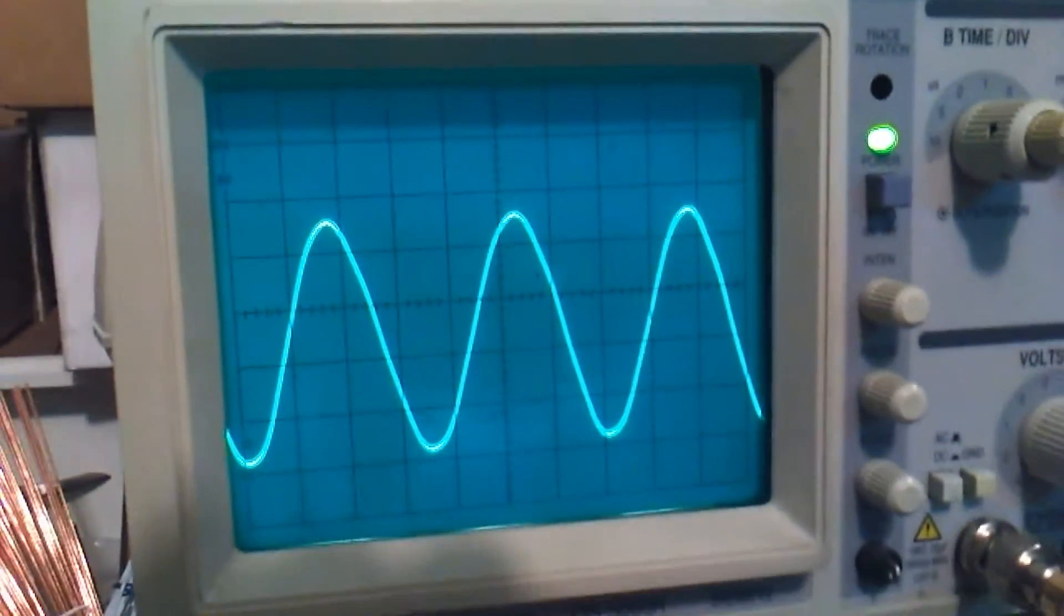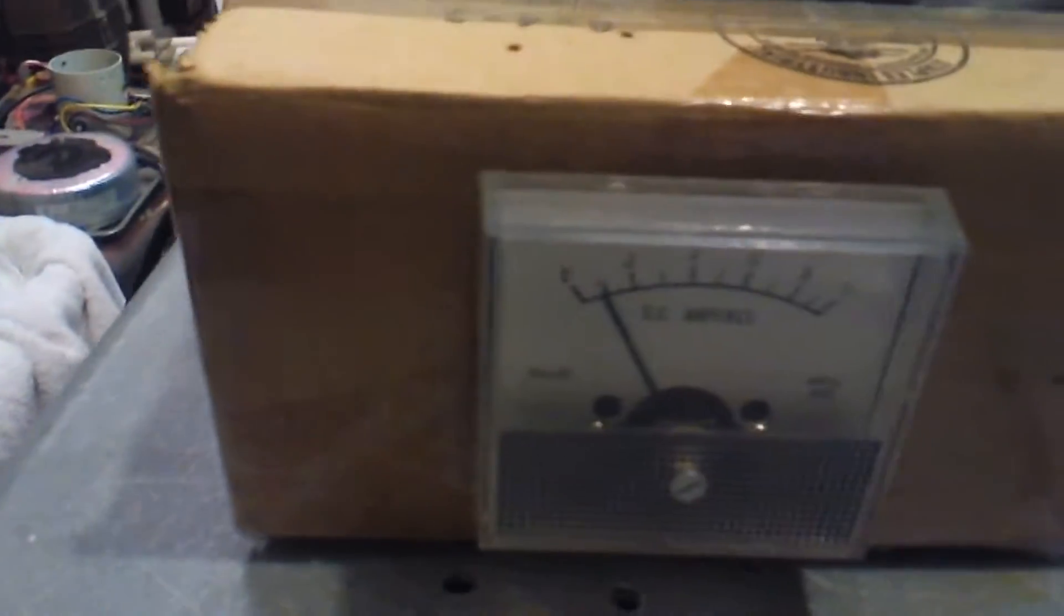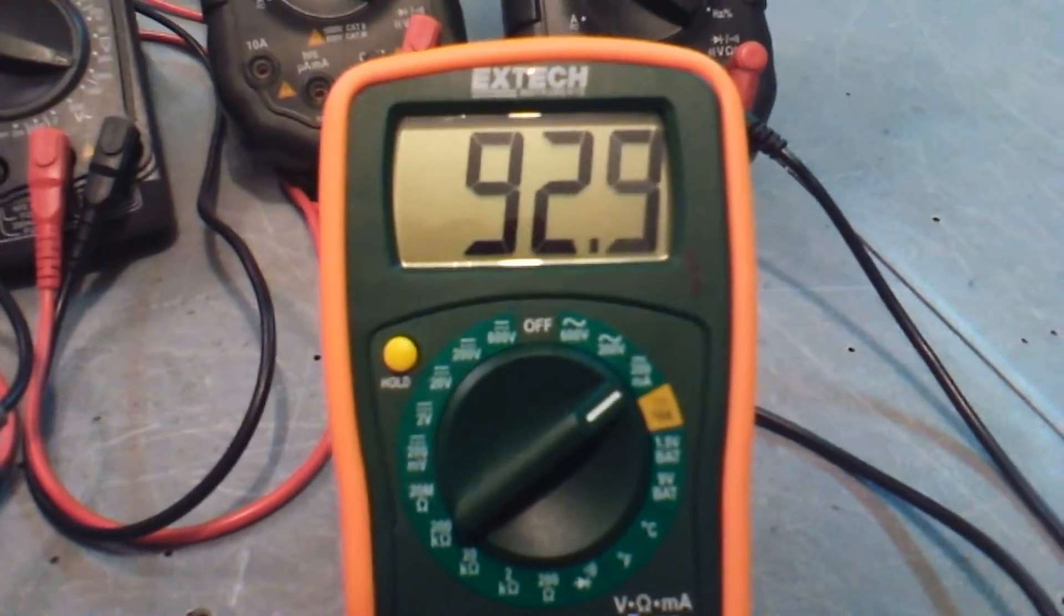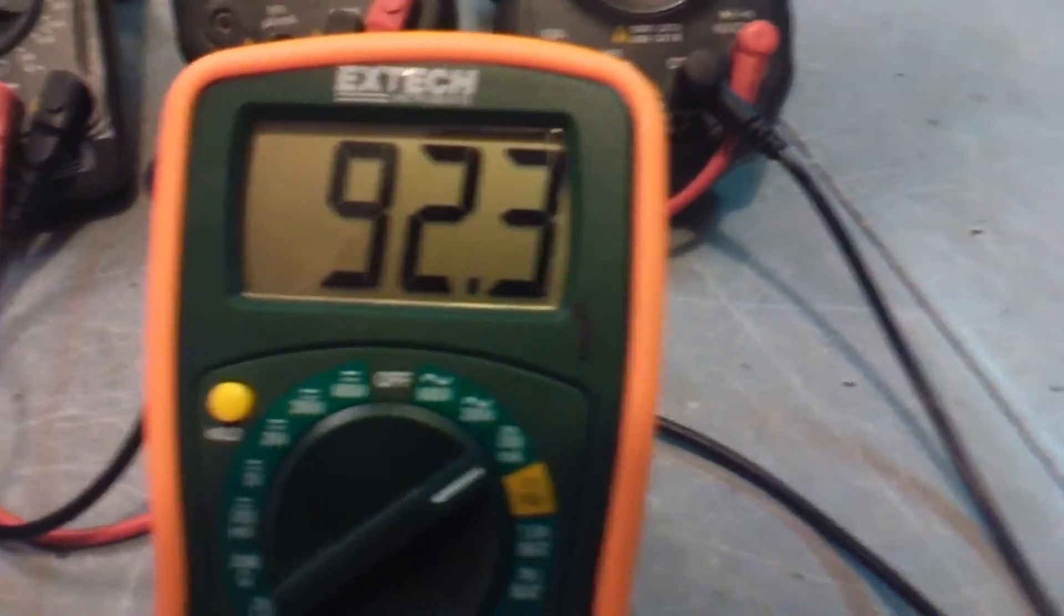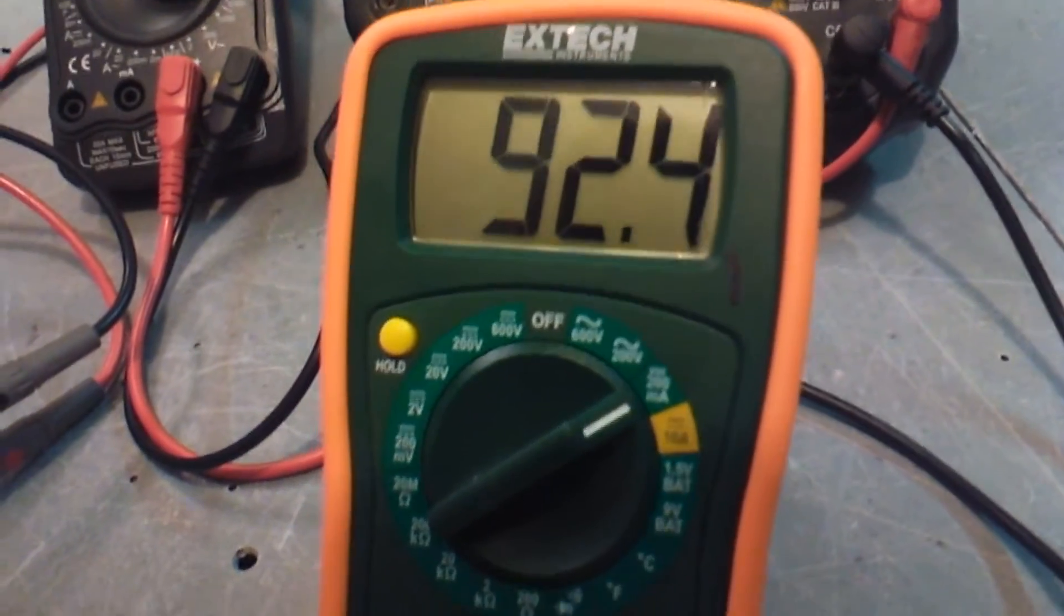This is what the signal looks like. This is the amp meter, amp draw for one of the KT-88. This is the other one. We're running about 8 watts of difference between those two, we'll have to balance them by adjusting the plate resistors.